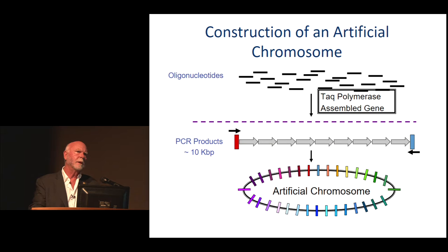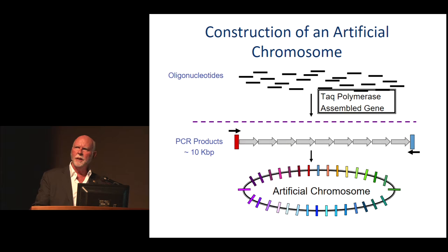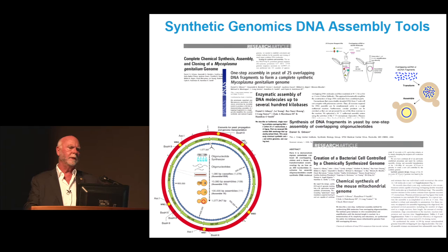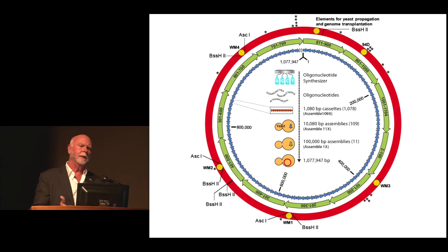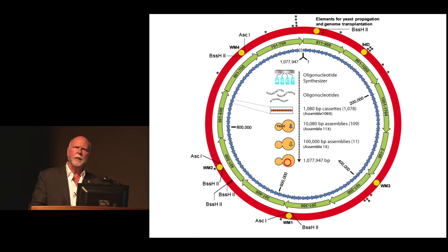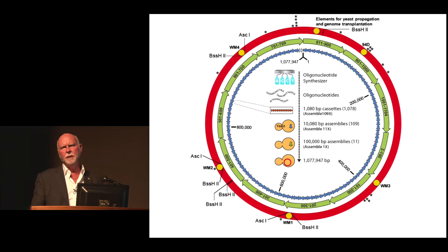We wanted to make an entire chromosome for a self-replicating cell. We knew if we could make viral-sized pieces accurately, we might be able to link them together to get to the chromosome. This culminated in 2010 with making a 1.1 million base pair genome from Mycoplasma mycoides. It was made starting with 1,000 base pair pieces, assembling ten of those at a time, ultimately injecting them into yeast using homologous recombination to assemble the entire chromosome.